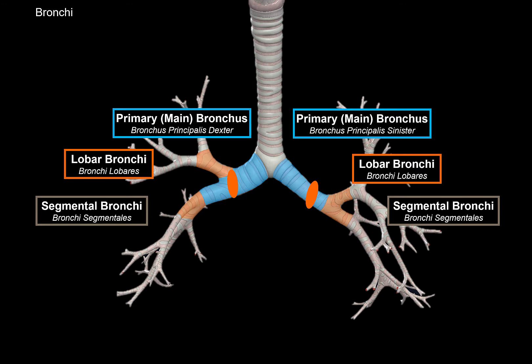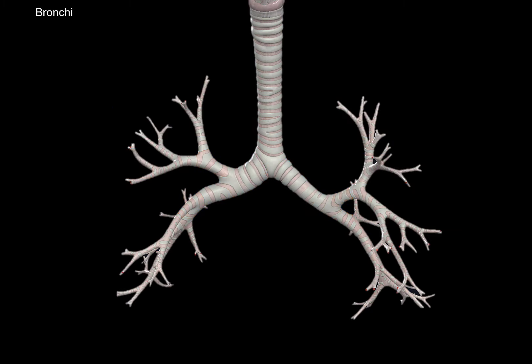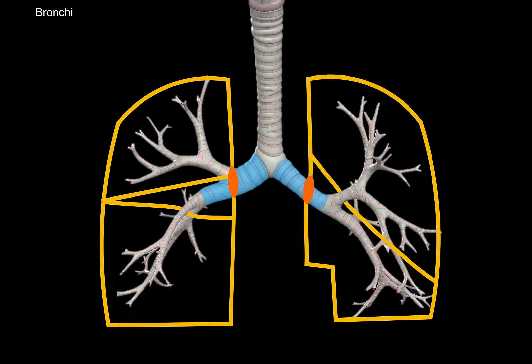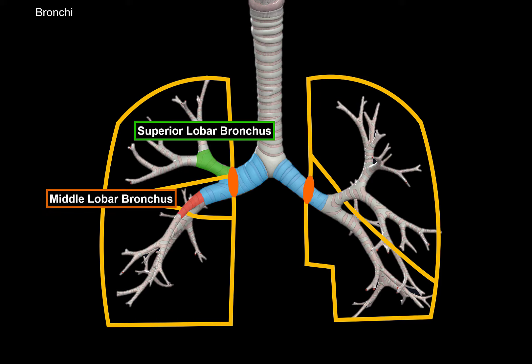Again, the primary bronchus becomes the lobar bronchi, which then becomes the segmental bronchi. Let's do that one more time in a little more detail. The primary bronchus goes through the hilum of the lungs. The right lung has 3 lobes and the left one has 2 lobes. So the right one will branch off as the superior lobar bronchus, middle lobar bronchus, and the inferior lobar bronchus.